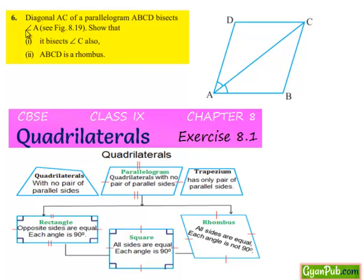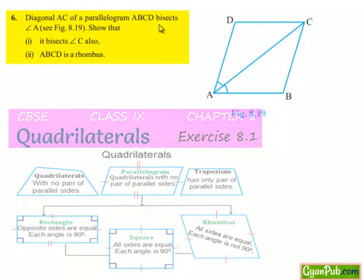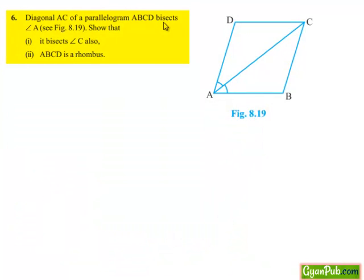Moving on to the sixth problem. Diagonal AC of parallelogram ABCD bisects angle A. Then show that: first, it bisects angle C also, and secondly, ABCD is a rhombus.